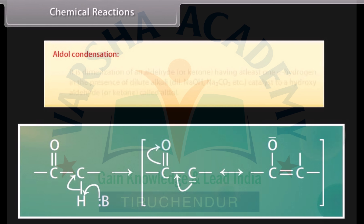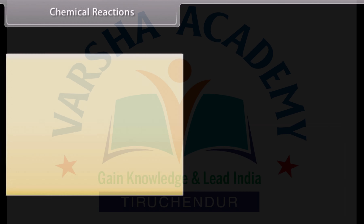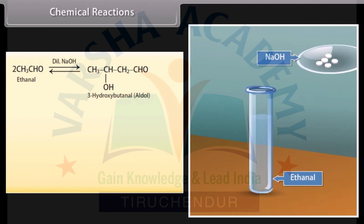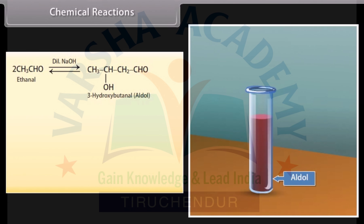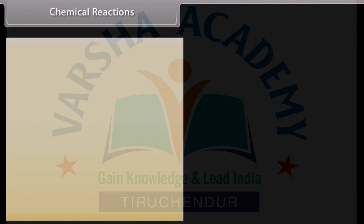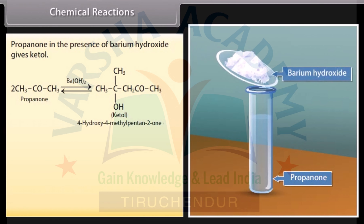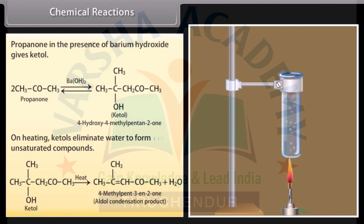Aldol condensation: it is the dimerization of an aldehyde or ketone having at least one alpha hydrogen in the presence of dilute alkali, such as dilute sodium hydroxide or sodium carbonate, to form a hydroxy aldehyde or ketone called aldol. Ethanal in the presence of dilute sodium hydroxide undergoes condensation to form a syrupy liquid known as aldol. On heating, aldols eliminate water to form unsaturated compounds. Propanone in the presence of barium hydroxide gives ketol, which on heating eliminates water to form unsaturated compounds.